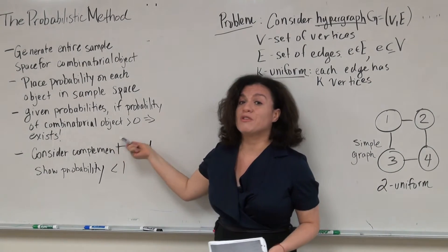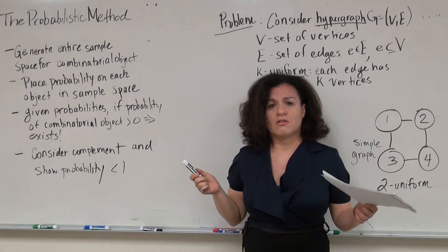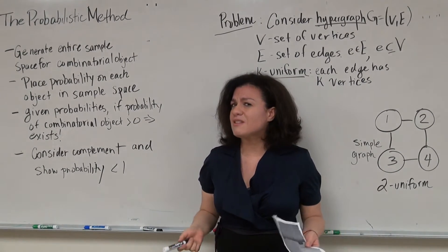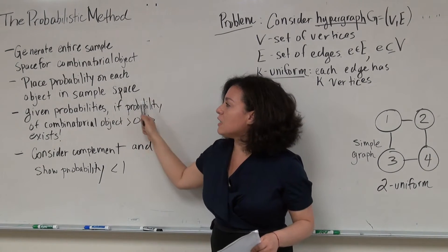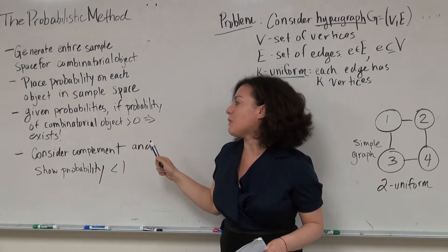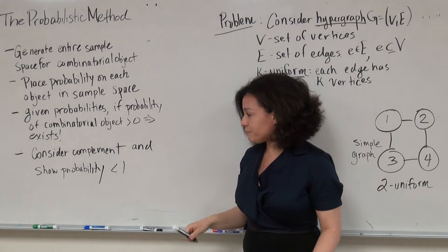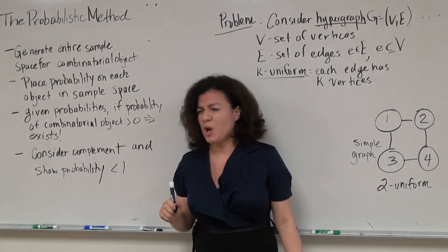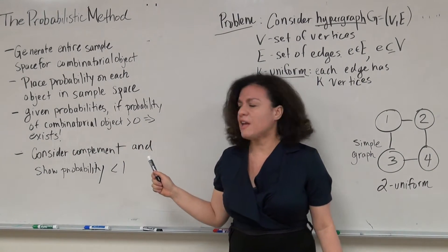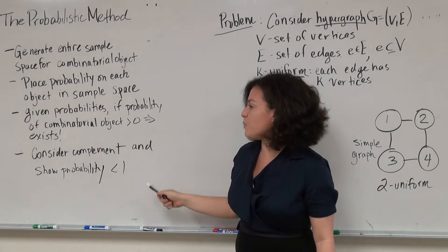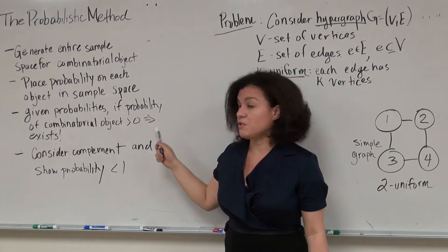Now this step is very counterintuitive, because in our everyday life, if someone were to tell us there's a non-zero probability that aliens exist, you wouldn't necessarily be convinced of that. However, in this case, we're actually putting the probability on the entire sample space and showing that this point would have a greater than zero probability. Often when we apply the probabilistic method, we look at the complement of the event, and if we can show that its probability is less than one, then we show that the probability of the combinatorial object of interest is greater than zero.